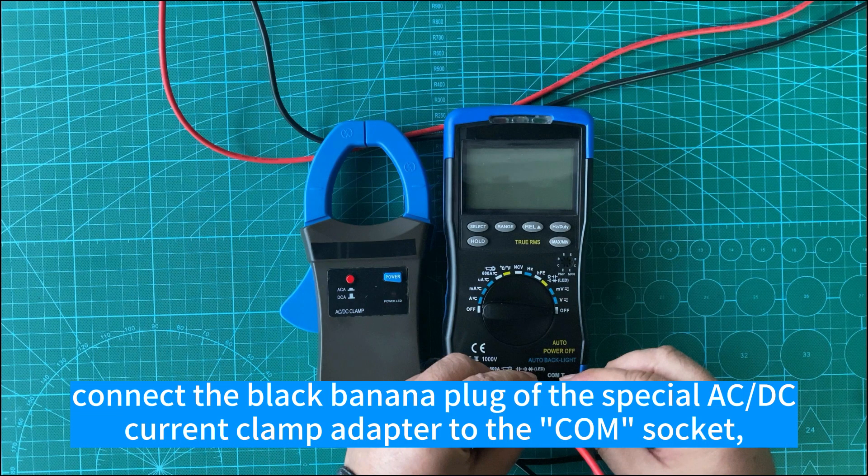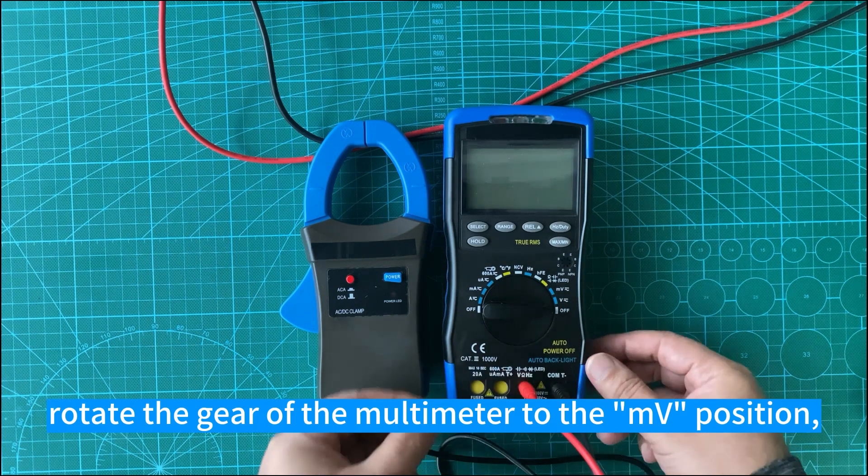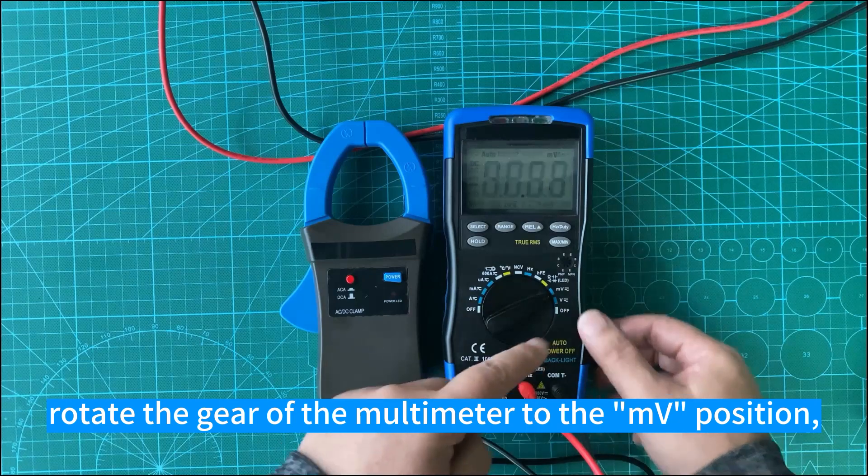Before measurement, connect the black banana plug of the special AC DC current clamp adapter to the COM socket, and connect the red banana plug to the microamp milliamp socket.